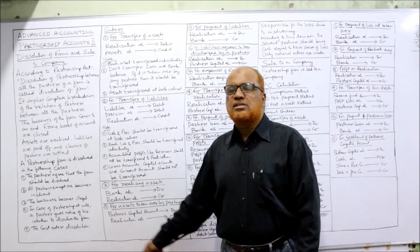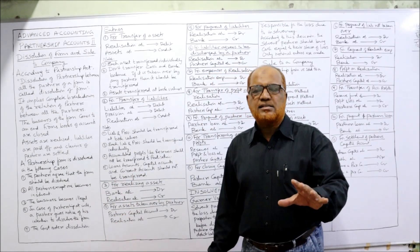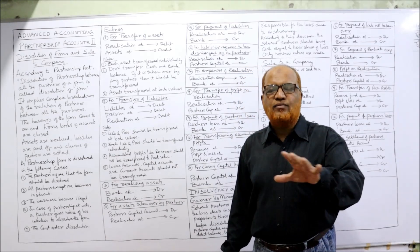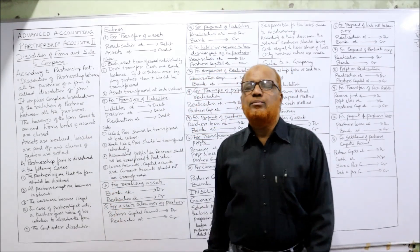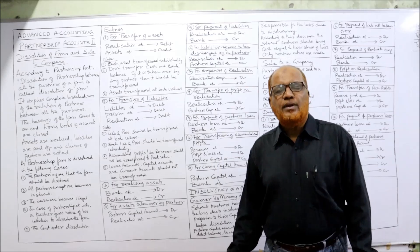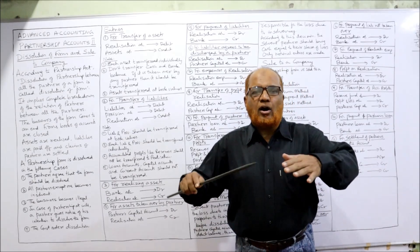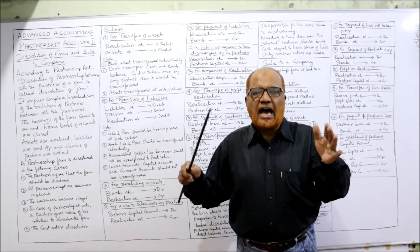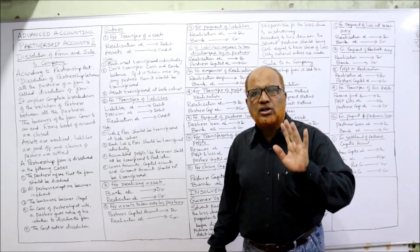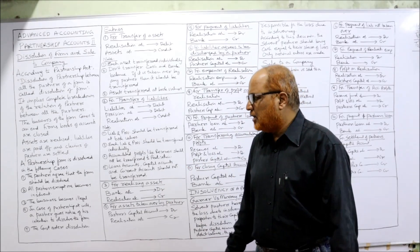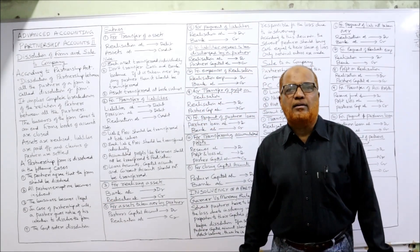A partnership firm is dissolved in the following five cases. First case: the partners agree that the firm should be dissolved. Because partnership is made from an agreement, similarly when all the partners agree to dissolve the firm, the partnership firm will be dissolved.